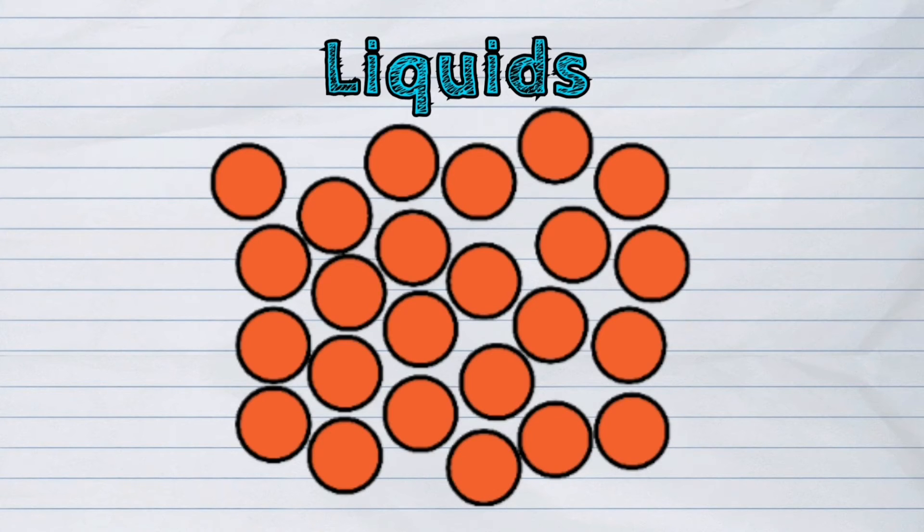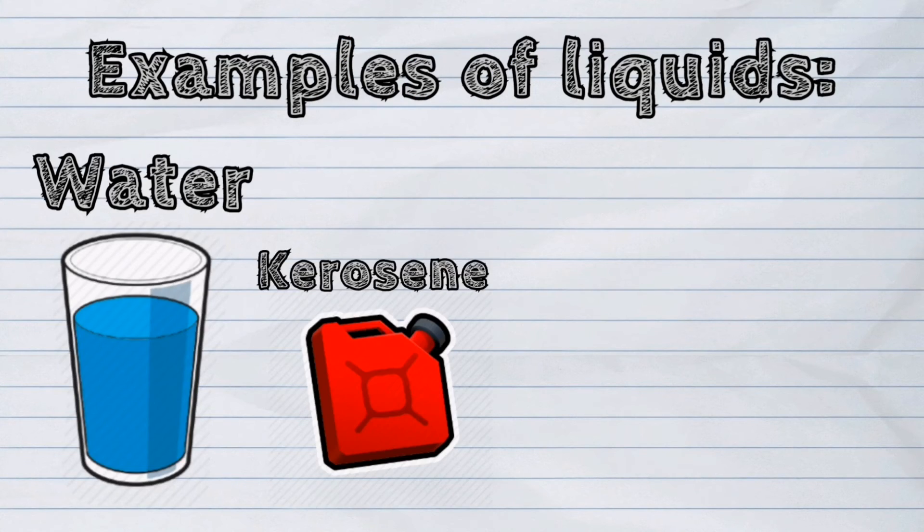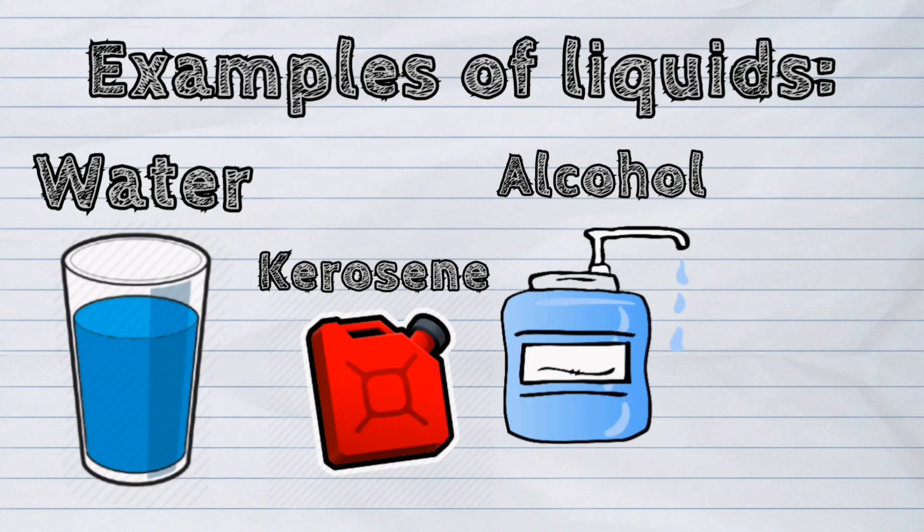Liquids are made up of particles that are not tightly packed together. Examples of liquids are water, kerosene, alcohol, and milk.